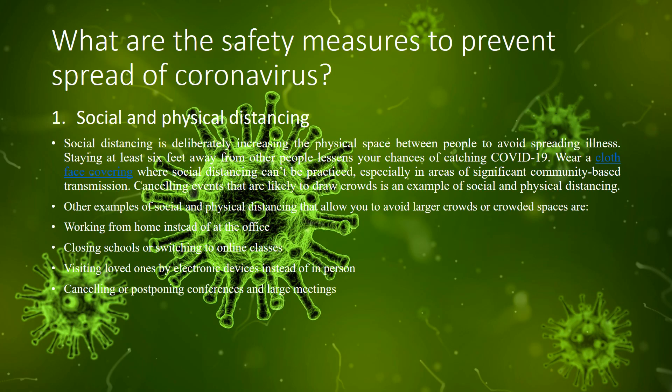What are the safety measures to prevent the spread of coronavirus? First is social and physical distancing. Social distancing means deliberately increasing the physical space between people to avoid spreading illness. Staying at least six feet away from others lessens your chances of catching COVID-19. Wear a cloth face covering where social distancing cannot be practiced, especially in areas of significant community-based transmission.